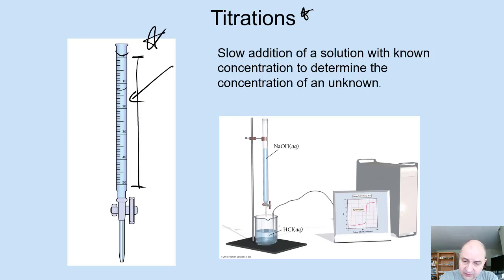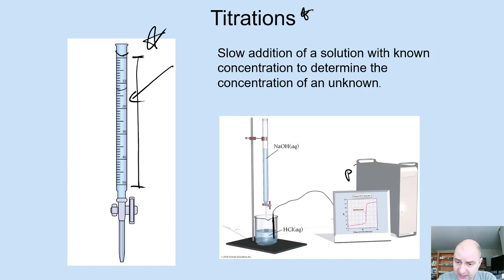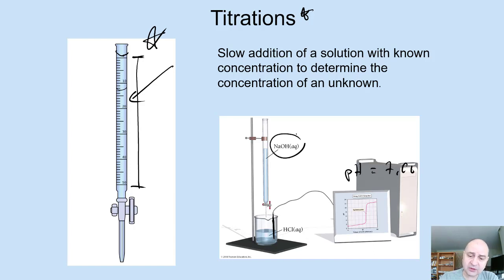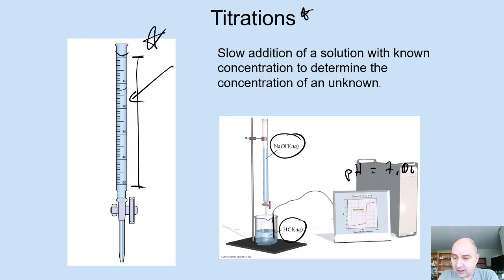For acids and base reactions, it's probably a good idea to monitor the pH using a pH meter — just an electrode you dip into a solution and get a readout. For a strong acid and a strong base in a neutralization reaction, your pH would be equal to 7 at the endpoint. We can also use indicators — things that give you different colors.